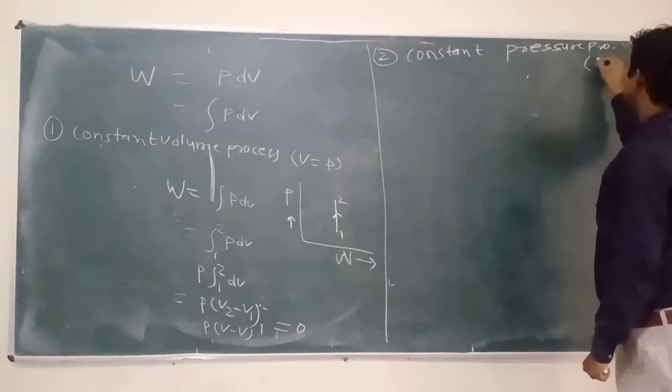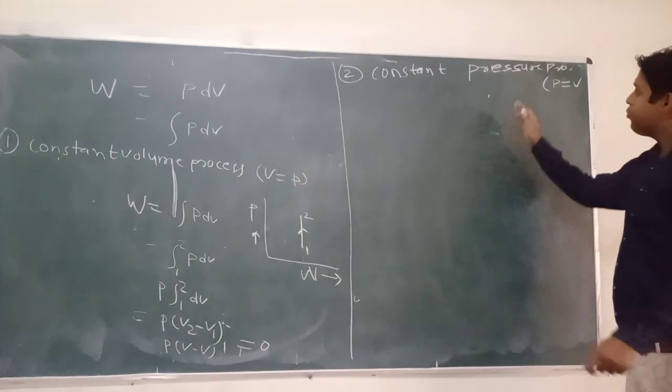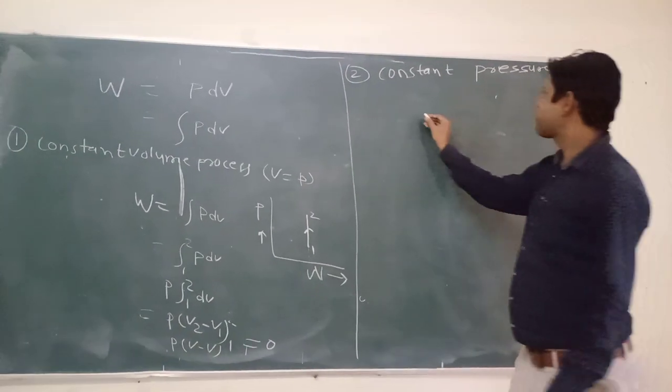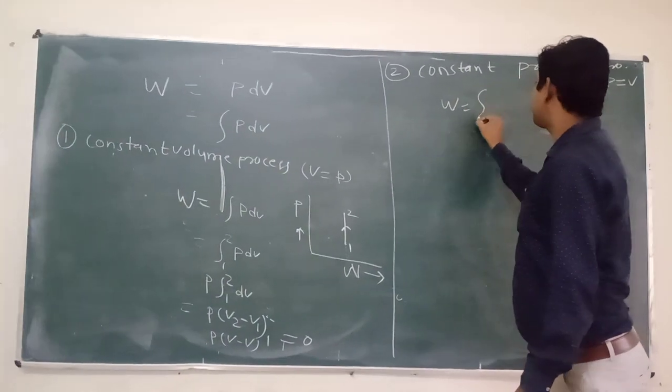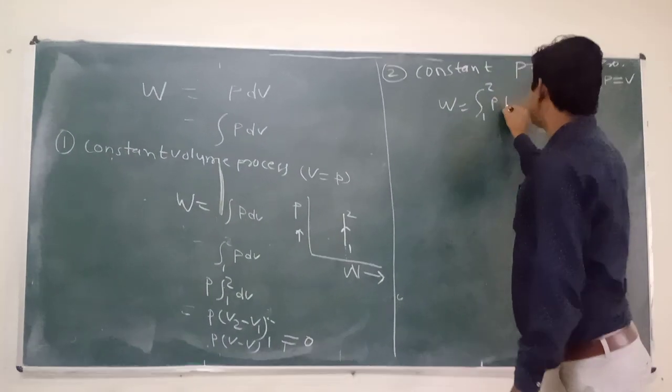Constant pressure process. That is P equal to constant. Again, we apply the formula W equal to integral 1 to 2, PdV.